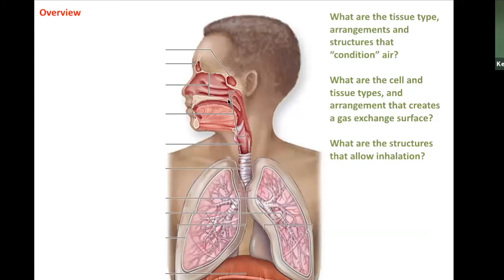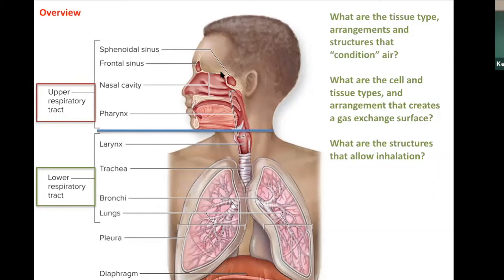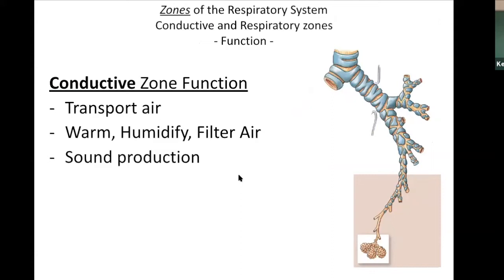As air moves from the nasal cavity down through the trachea and into the bronchi, you should ask yourself at each point: what is the histological tissue lining here? What are the big structures encountered along the way? These include structures involved in the fact that we share part of our respiratory tract with the digestive tract. We're talking about the upper respiratory tract — nasal cavity and pharynx — and the lower respiratory tract — trachea, bronchi, and alveoli.